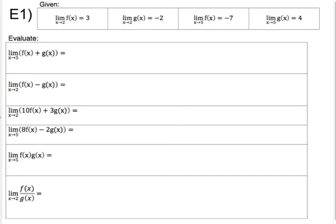Okay, so let's go ahead and do some limit problems. I've given you four limit values at the top. The limit of F of X as X approaches two equals three. The limit of G of X as X approaches two is negative two. The limit of F of X as X approaches five is negative seven. And the limit of G of X as X approaches five is four.